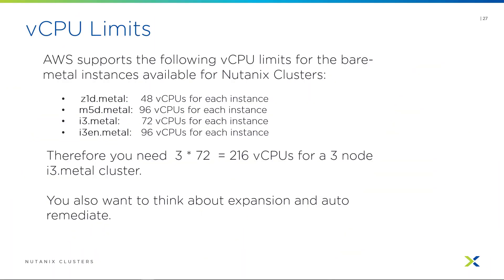Nutanix clusters allows you to deploy one node clusters for testing and, for production, three node clusters. Based on a three node cluster, AWS needs to be configured to allow that number of virtual CPUs to be run in your account. The default tends to be quite low and set for normal instance types. For bare metal, since they use a very large amount of virtual CPUs, you probably need to increase your vCPU limits. For example, an i3 metal cluster has 72 virtual CPUs times three nodes, which would require 216 virtual CPUs.